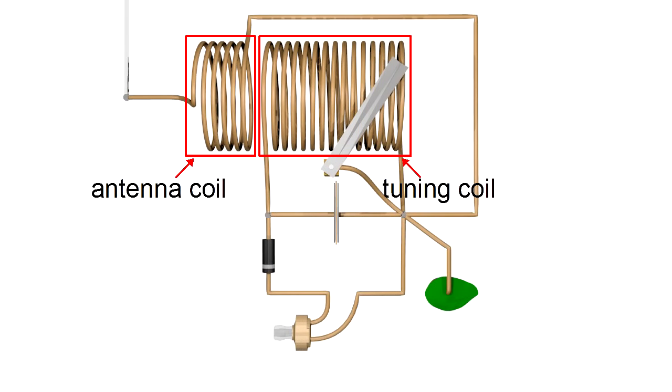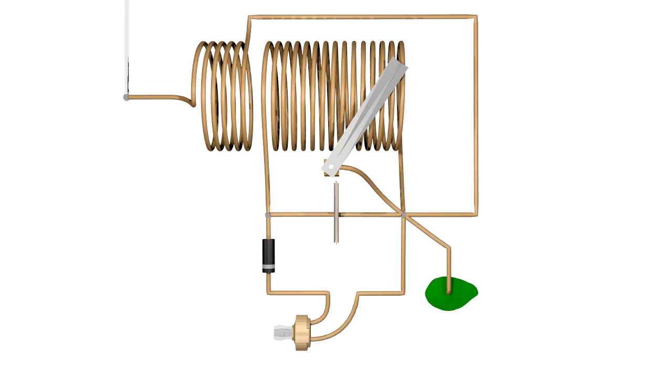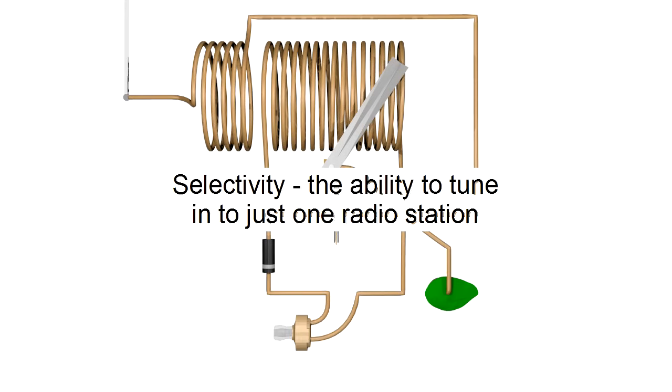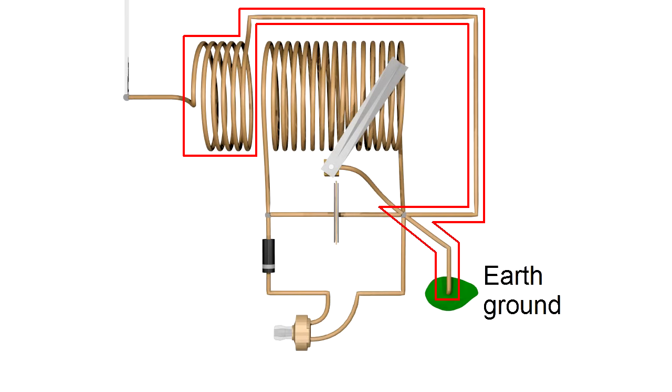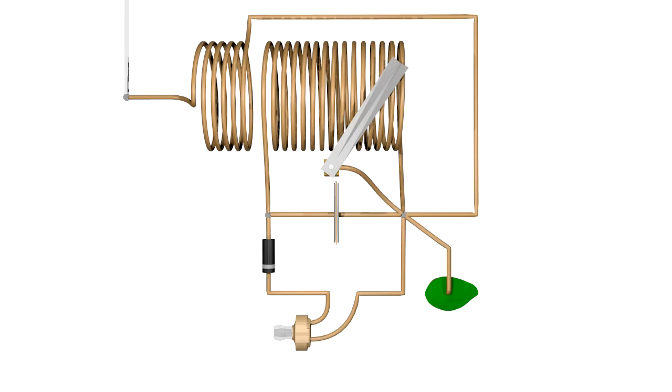Another question we can ask is why does this crystal radio have two coils? One reason for two coils is to help the radio tune into just one radio station at a time, what we call the radio selectivity, or its ability to select one radio station. Because of this tuning circuit, the radio wave we want to listen to influences the electrons in this section, while the other radio waves are left to influence the electrons in this other section that goes to ground. If we had only one coil, then we'd have to direct the energy from the undesired radio waves in some other way.